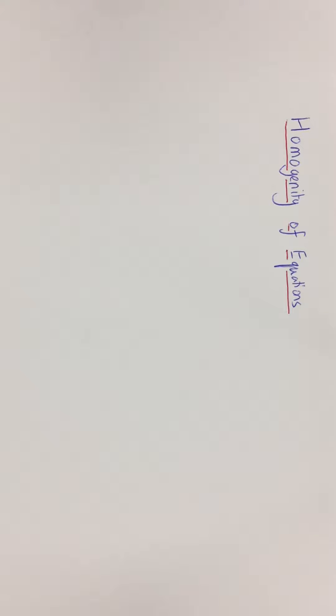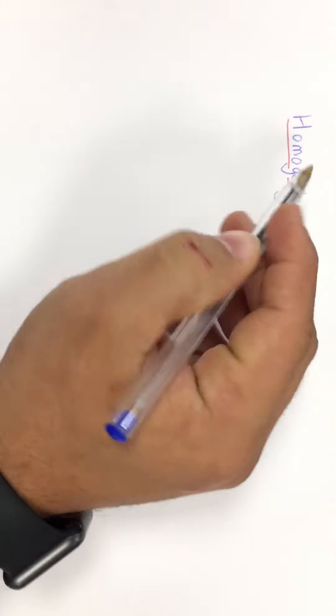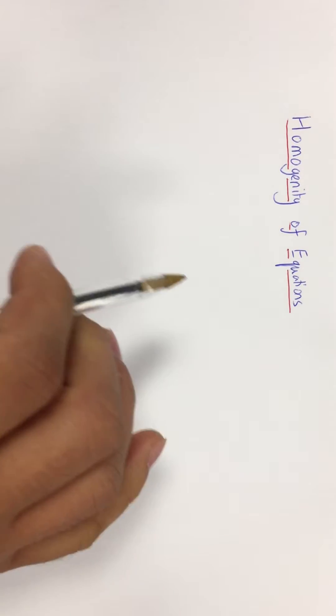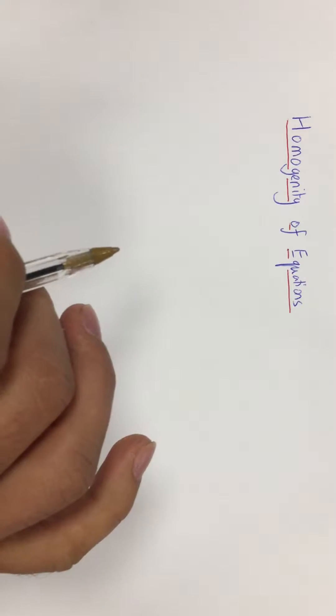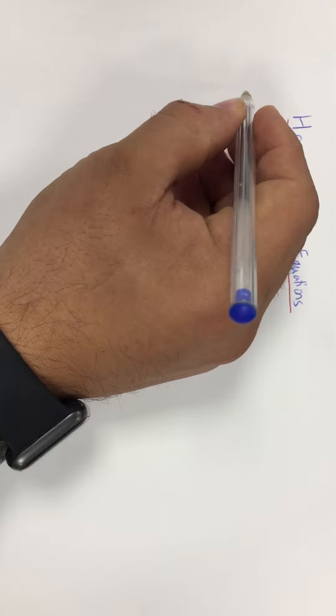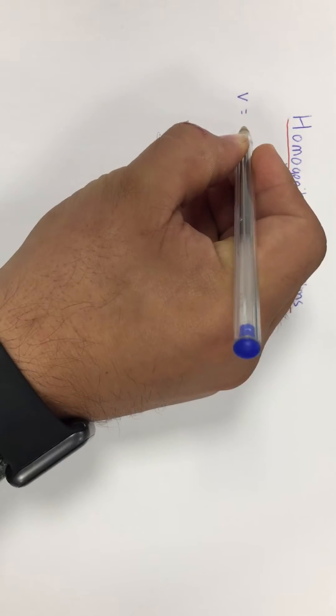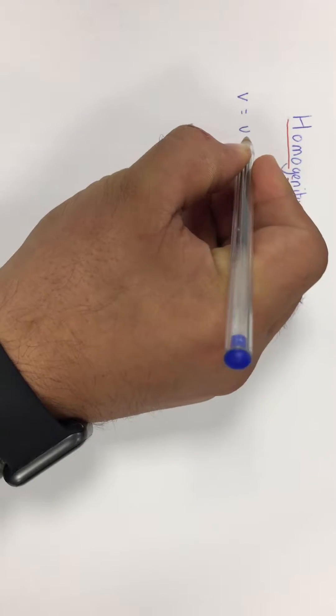This video is for A-level physics, looking at homogeneity of equations. The word 'homo' means 'same', so when we talk about homogeneity of equations we're talking about showing that equations have the same units on each side of the equation. The way we would go about this — for example, starting with a simple equation.